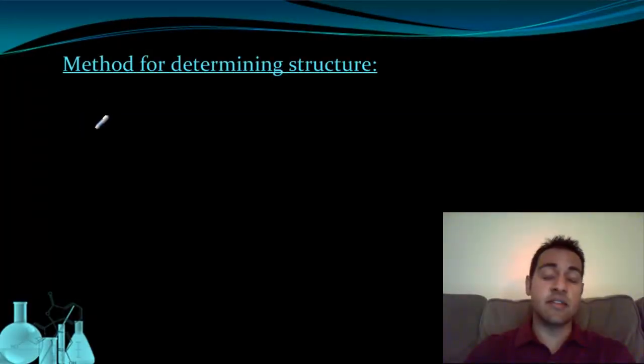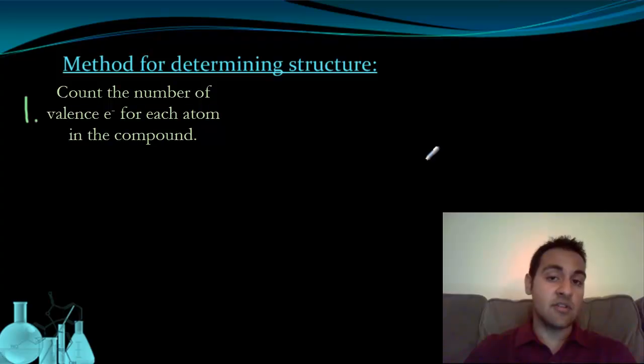There is a method that exists for determining the structure of any covalent compound. And this sequence will work for anything. You just have to follow the steps carefully. This entire method boils down to one thing. You're trying to figure out what the difference is between the number of electrons needed to satisfy every octet and the number of electrons you start with based on the elements that you're given.